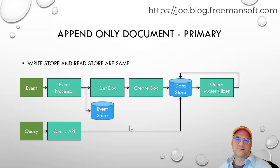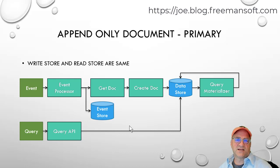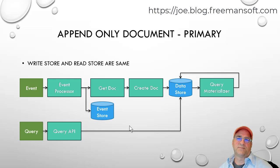We're going to pick something similar for this append-only document store. We're going to pull in those events — whether they're API calls or events — drop those in the event store, but rather than just leaving them in the event store and transitioning them asynchronously, in this case what we're going to do is a get-doc, modify, create a new doc by merging those two together, and put them in the data store. So the primary data store has an event store, but the data is synchronously posted into the primary store, which is the query store.